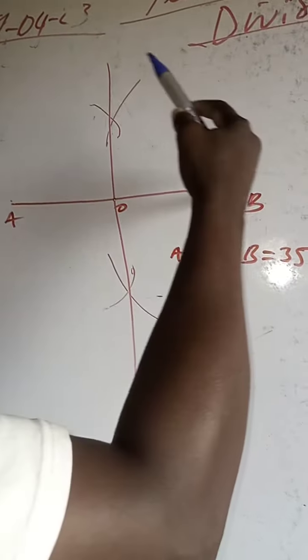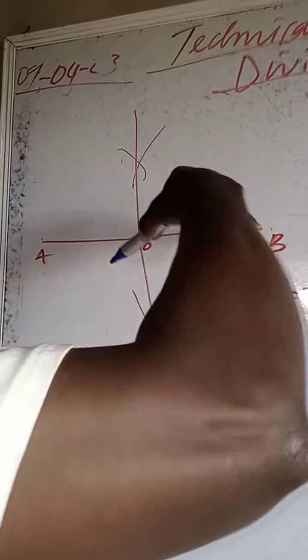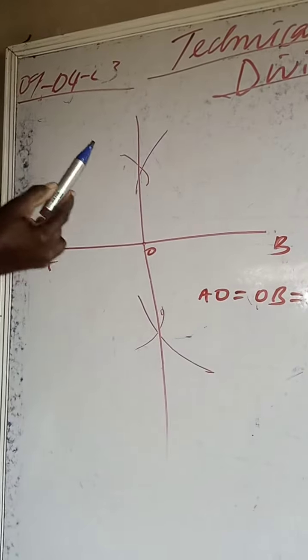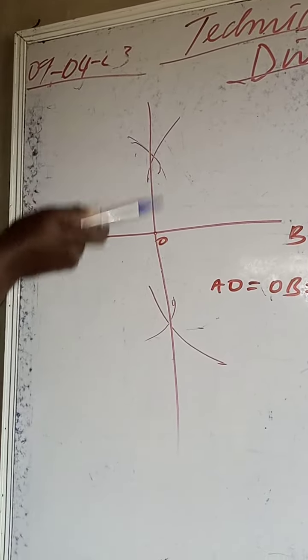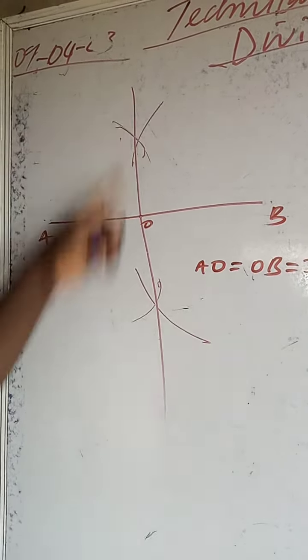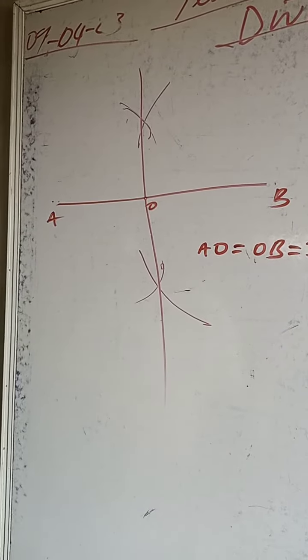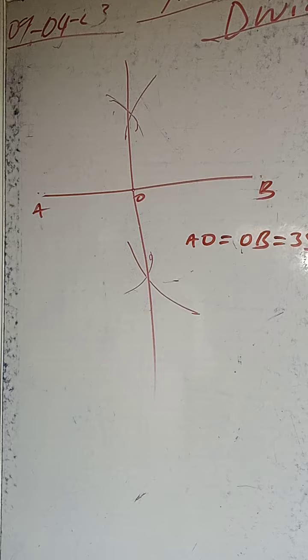Again, when you are marking the arc, you stay here, you mark the arc up and down. With the same radius, you come to this other side and mark another arc like this and like this. Then you draw the bisector. This line that divides into two is called a bisector. That's how to divide the line into two equal parts.